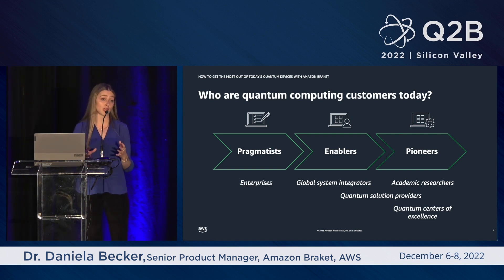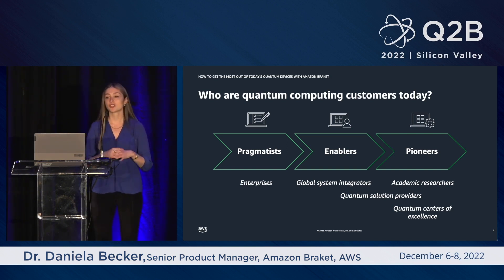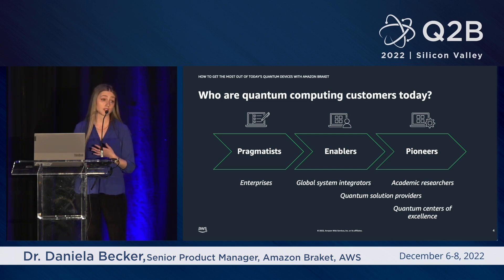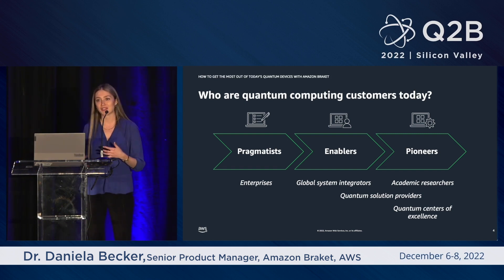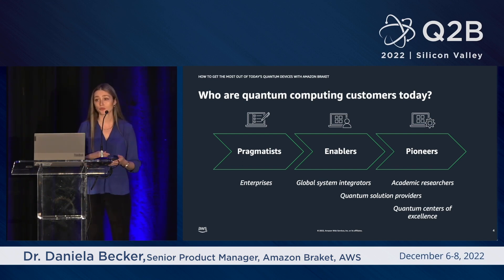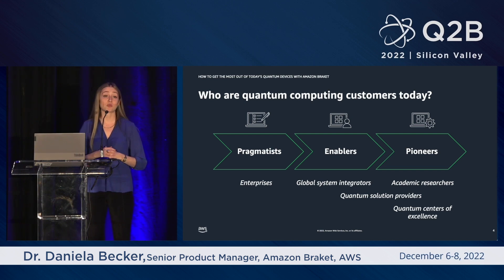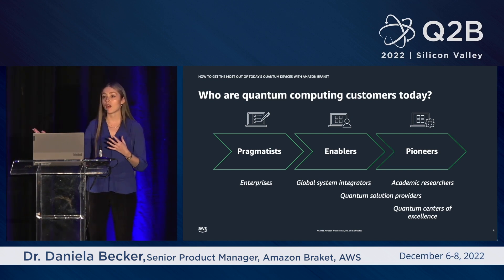We also work with many quantum solution providers, including our very gracious host this week, QCWare, who built solutions on top of AWS and Braket for their customers. This is a particularly interesting type of customer because they blur the line between enablers and pioneers. If you're building a commercially viable solution to sell in this industry with the hardware available today, you need quite a bit of expertise in quantum computing as well as building quantum applications. And pioneers are academic researchers and corporate scientists who are truly pushing the state of the art in novel quantum computing applications or better understanding the quantum hardware.